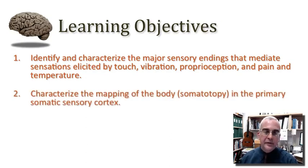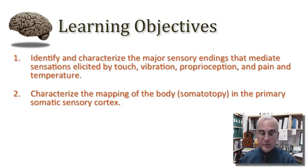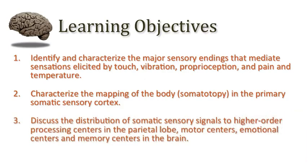I want you to be able to understand the concept of somatotopy — that is, how the body is mapped in the structure of the nervous system — and we'll confront that in the primary somatic sensory cortex in this tutorial. I also want you to be able to discuss what happens to mechanosensory information as it enters cortical networks. We will spend a fair amount of attention on the organization of the postcentral gyrus, and I want you to have a sense of where that information goes from there.